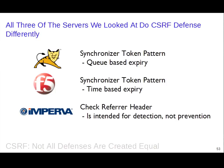Summary of server-level solutions: Tomcat — synchronizer token pattern with queue-based expiry, per session, 5 tokens default; F5 ASM — synchronizer token pattern with time-based expiry; Imperva — referrer header checking, largely used for detection rather than prevention. Tomcat is probably the most commonly used of these three since it's free and widely deployed. The others are useful if you already have F5 or Imperva infrastructure in place.